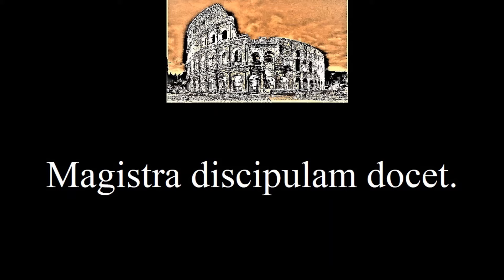The subject is the doer of the verb, and this is the default form of the noun, which we saw in the last lesson. The object is the thing the verb is being done to, and in Latin we have to change the form of the noun — or decline it — in order to tell it apart from the subject.